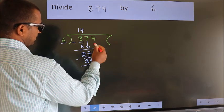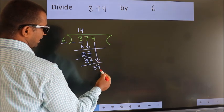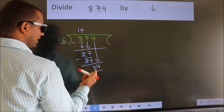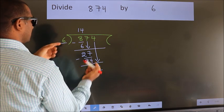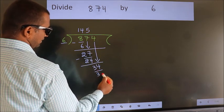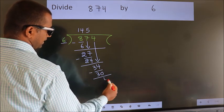After this, bring down the beside number, so 4 down, so 34. A number close to 34 in 6 table is 6 times 5 is 30. Now we subtract, we get 4.